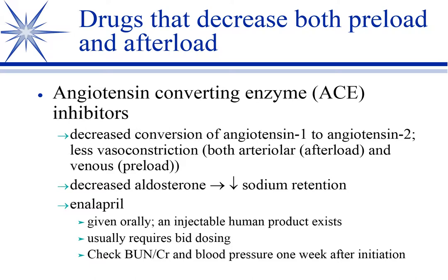Whenever you put a patient on an ACE inhibitor, come back in about a week and check their BUN, creatinine, and blood pressure. We check BUN and creatinine not because it's nephrotoxic — it's actually very beneficial in protein-losing nephropathies. What we're checking for is pre-renal azotemia. Every once in a while, some dogs respond so well to an ACE inhibitor that they become hypotensive and develop pre-renal azotemia. So you're using BUN and creatinine as an indirect measure of blood pressure — if elevated, you're using too high a dose and need to back off. Ideally, measure blood pressure directly.